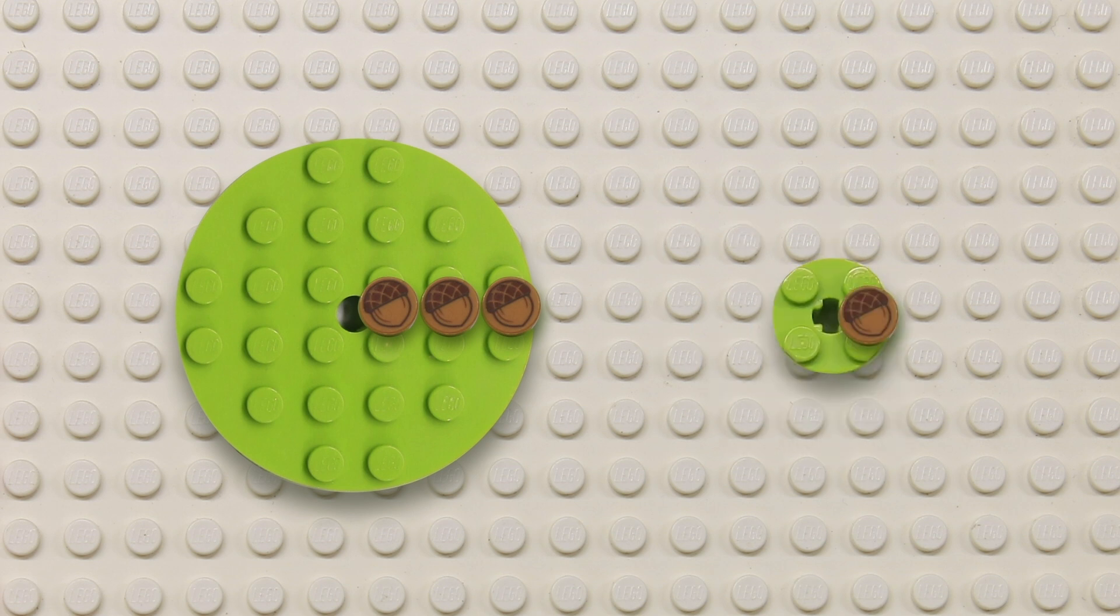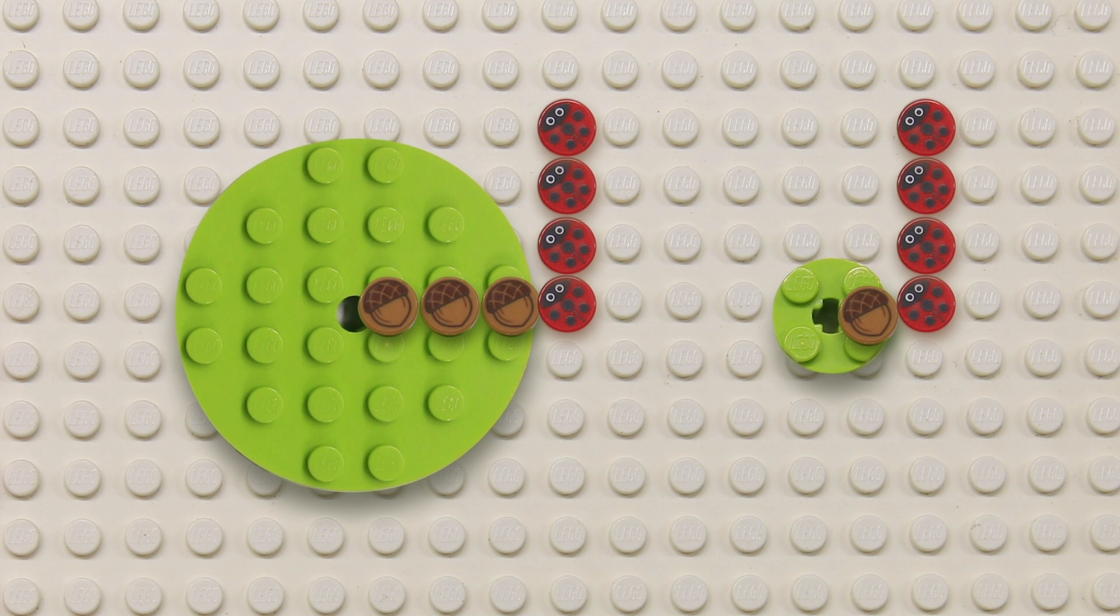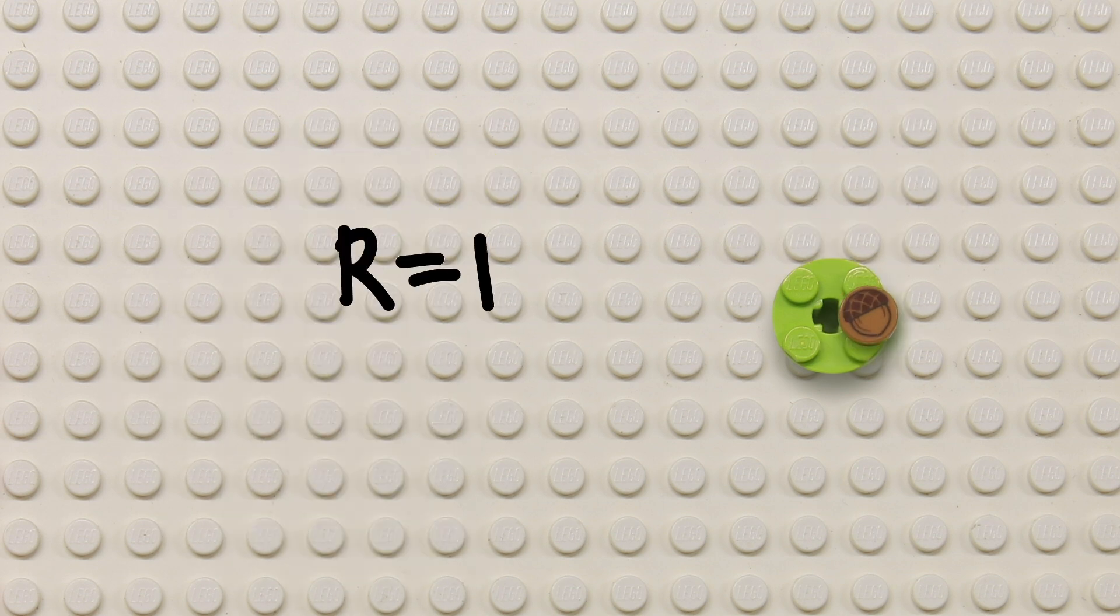For a smaller circle, the curvature kappa is bigger as it is a tighter circle and bends further away from a straight line. For example, a circle of radius 1 has a curvature of 1 divided by 1, which is 1.